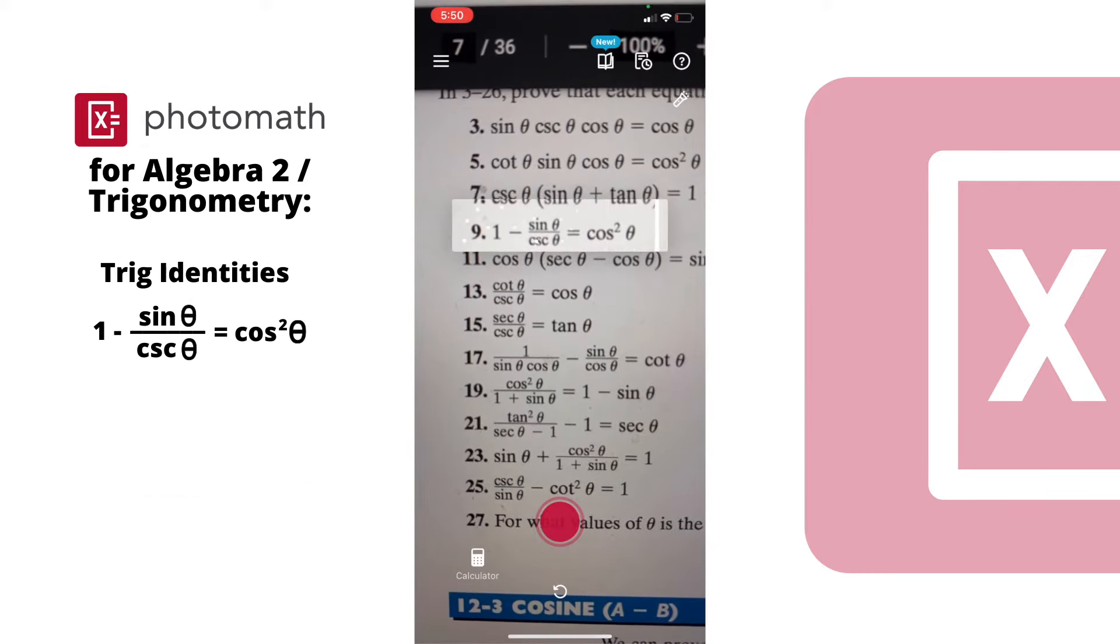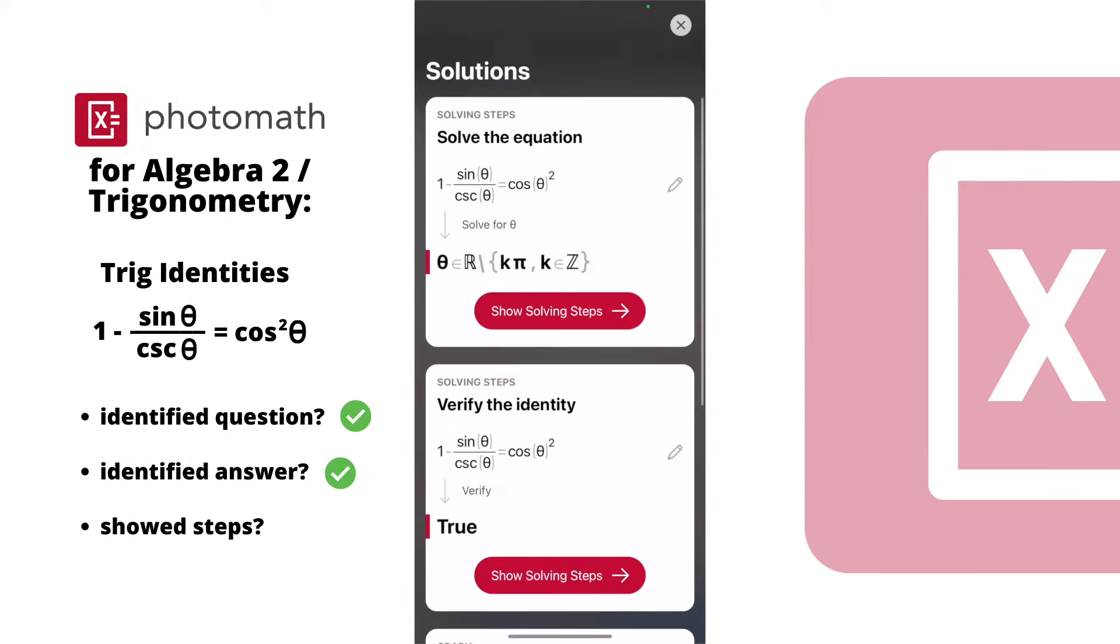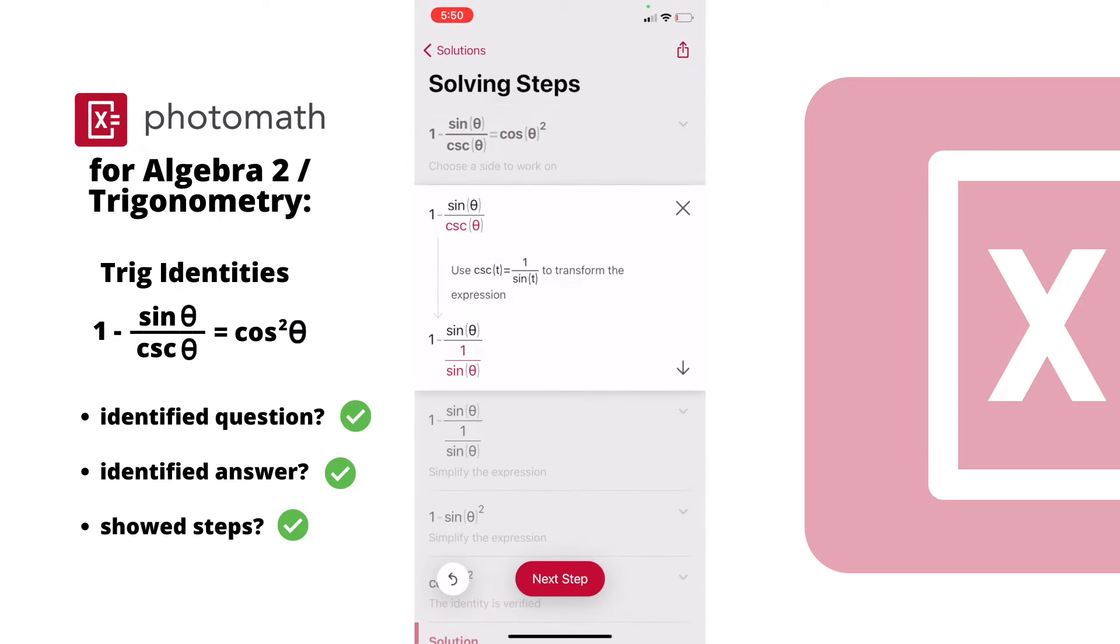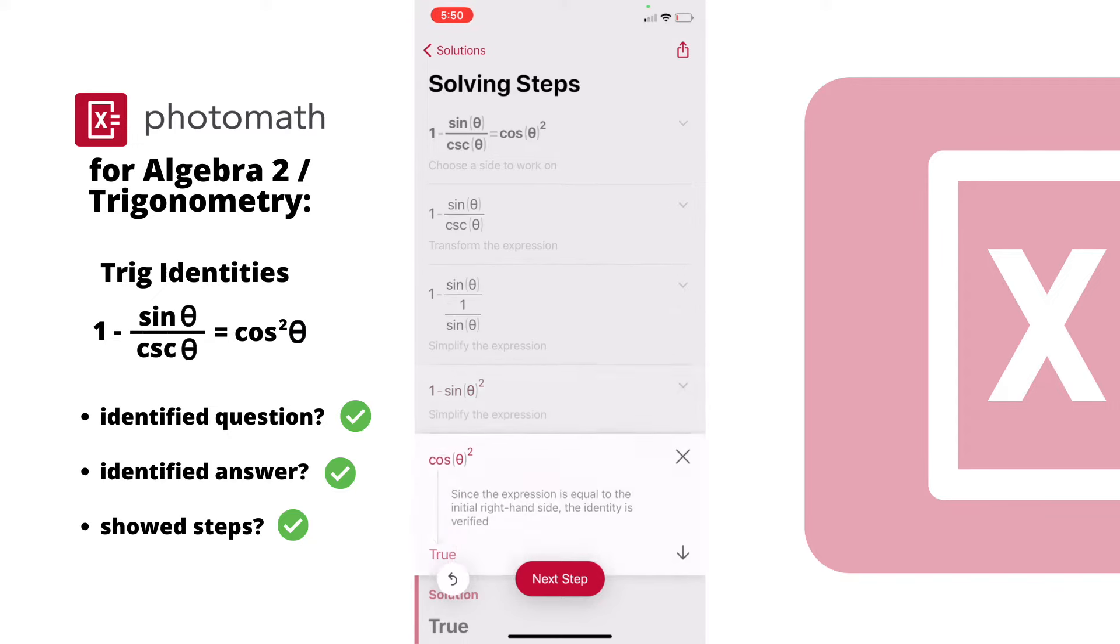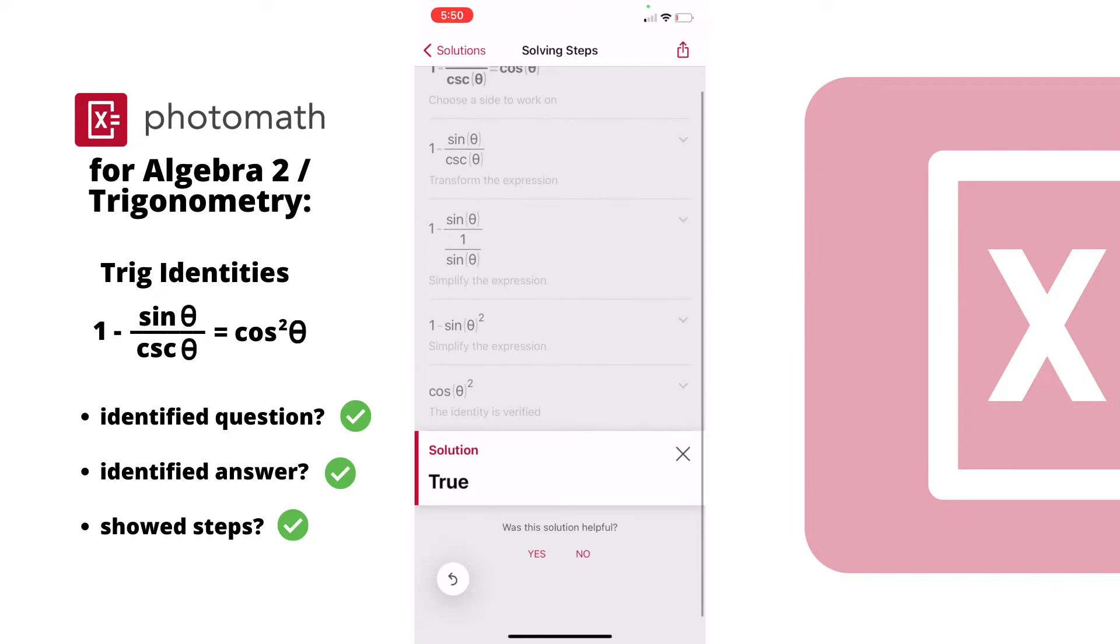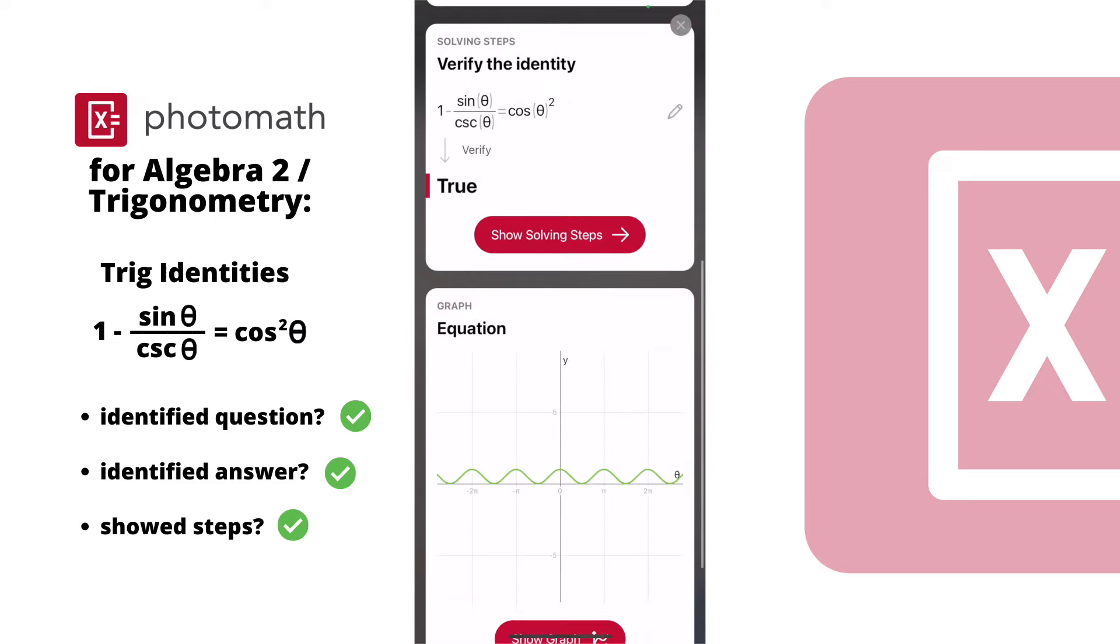For Trig, it not only verified that this is a Trig identity, but again, it clearly shows each step and explains it. If you want to go in more depth, you need to buy the Plus version, but I think this already shows you more than enough, and it's a lot more than the free version of Mathway.